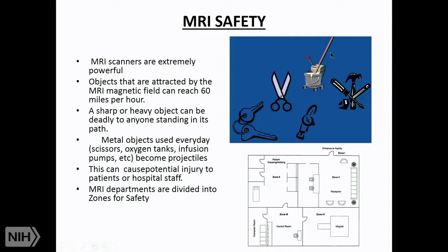All metallic objects can become lethal in and around an active MRI — the scanner will literally grab objects and project them into the magnet. Scissors flying at 60 miles per hour into a gantry with a patient present can be a very serious problem. To avoid this, MRI departments are designed with safety zones: zone one screens patients and objects at entry; zone two is a changing area where patients are quizzed about internal implants.